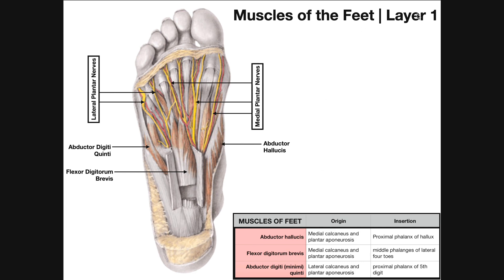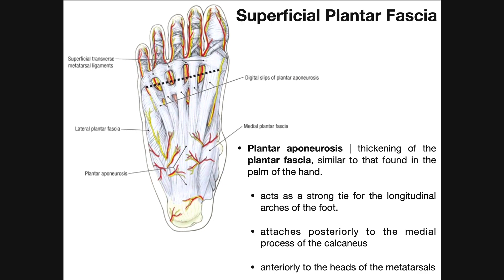Layer one of the muscles of the feet has three muscles in it: abductor hallucis, flexor digitorum brevis, and flexor digiti quinti. Some sources will call it digiti minimi — digiti minimi usually refers to the pinky, the fifth digit of the hand, while quinti refers to the fifth digit of the foot. These three muscles are directly deep to the plantar aponeurosis and superficial to layer two of the foot.